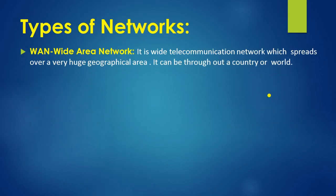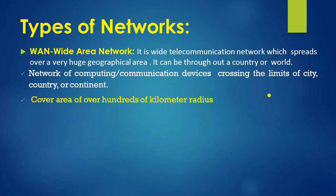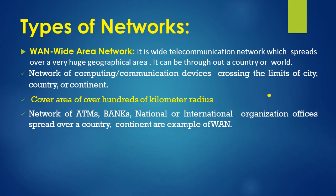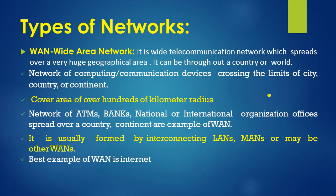WAN, wide area network, is used when you want to share data across countries. It covers over hundreds of kilometers radius. Examples include ATMs, banks, national and internet organization offices. It is usually formed by interconnecting LANs or other WANs, and the classic example is the internet.